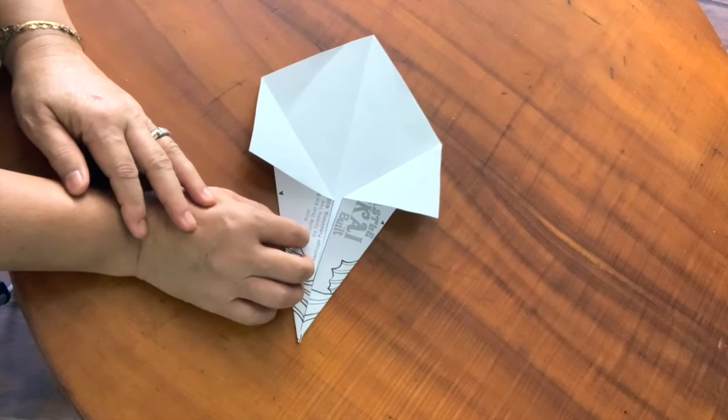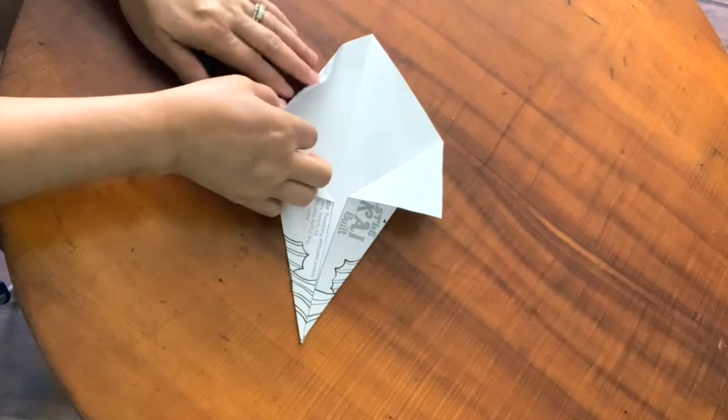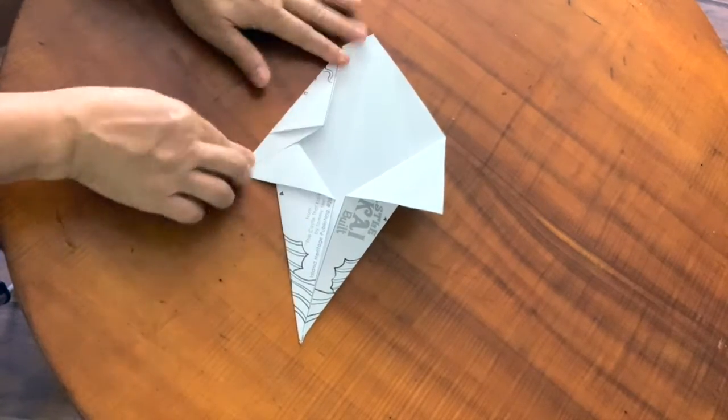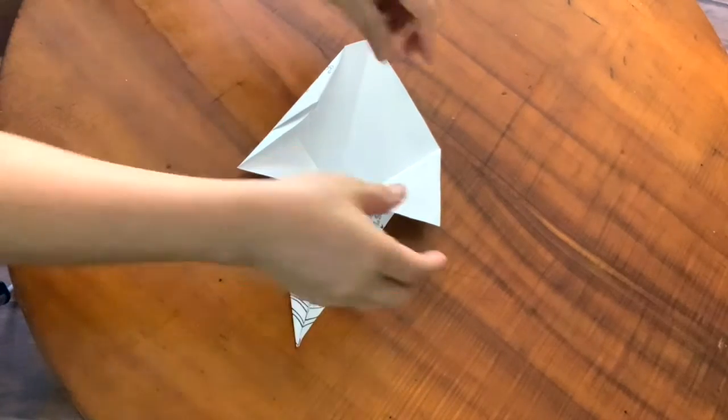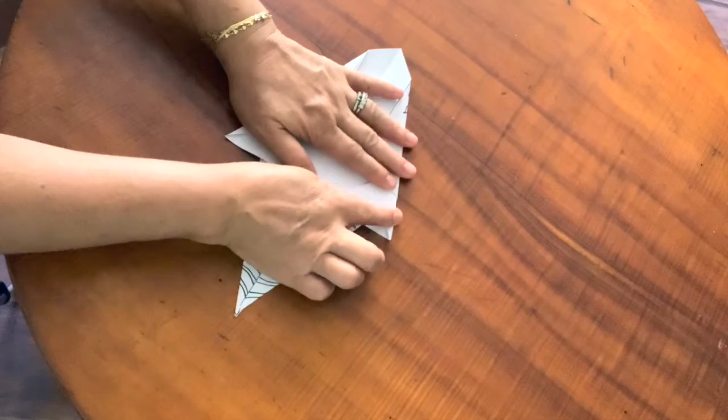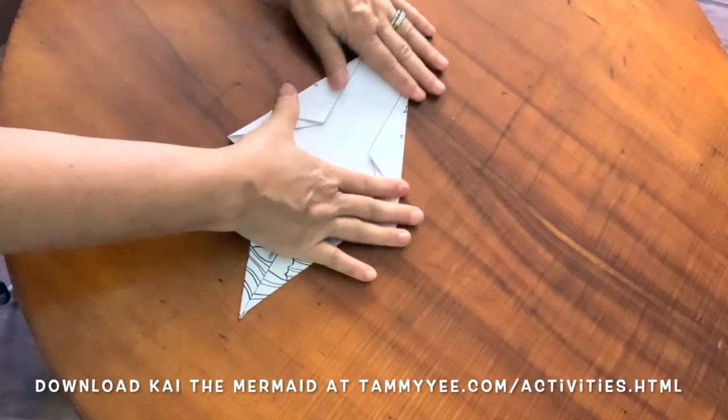Now we're going to use that line C fold as a guideline to fold her head in. See how there's line C right there? Right along that crease we made earlier. Repeat on the other side, using that crease as a guideline. There you go.